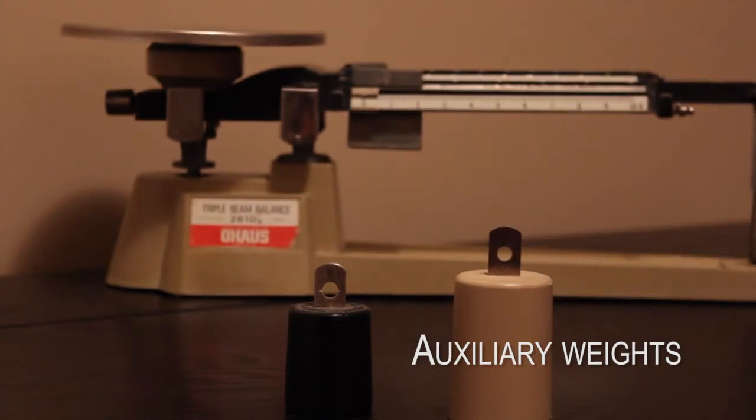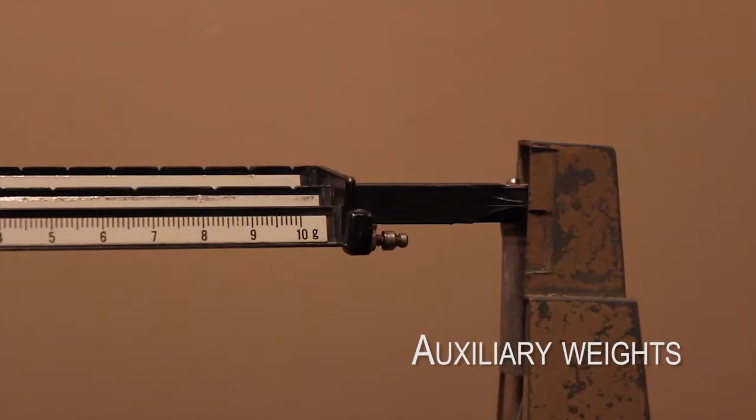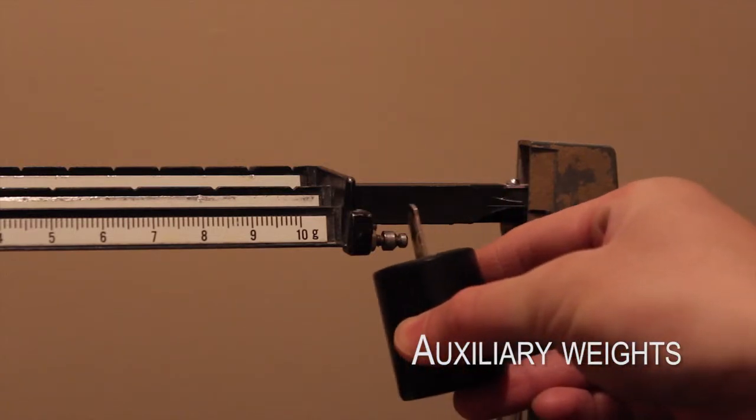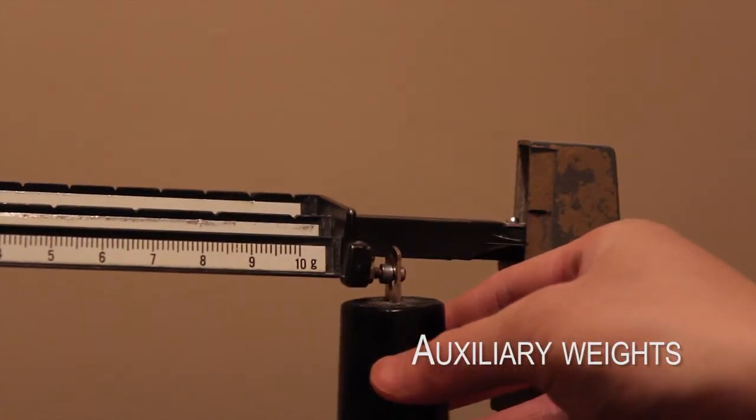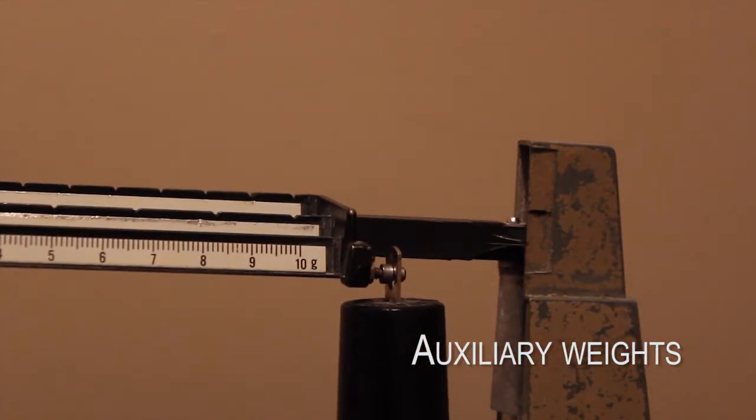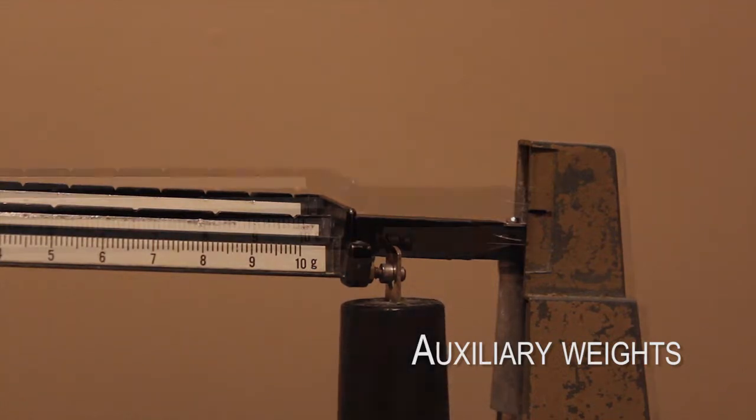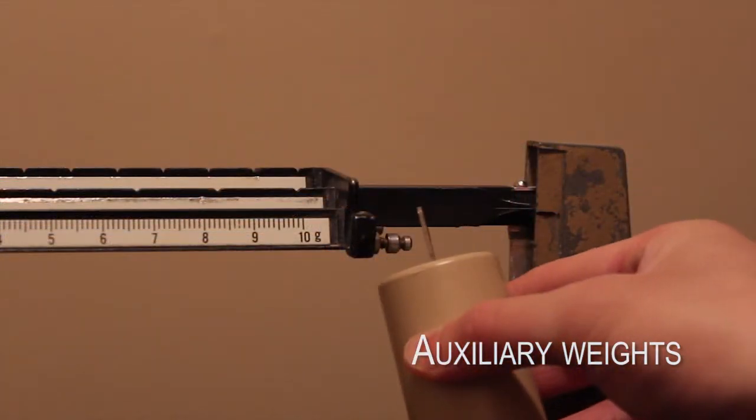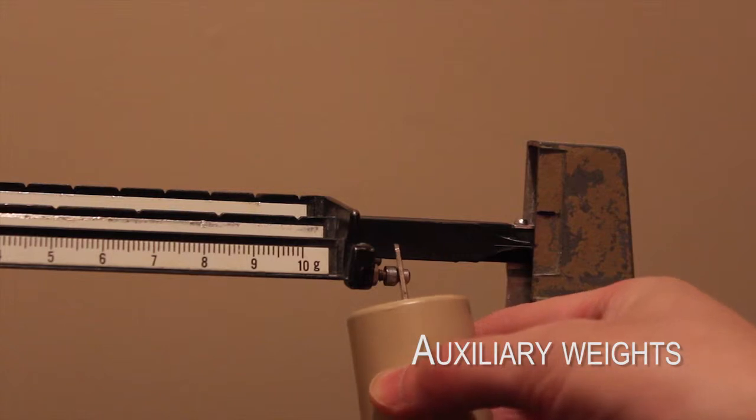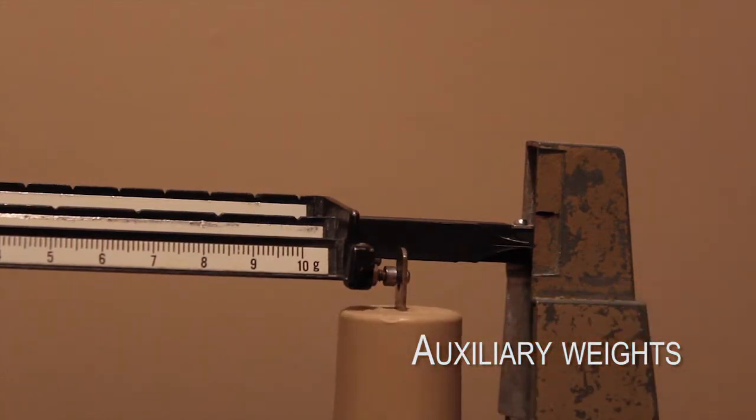Auxiliary weights can be added to measure heavier weights. Such weights include more than 500 grams and 1000 grams. The maximum weight that the triple beam balance scale can measure is 500 grams. Adding a 1000 gram auxiliary weight will allow the measurement of unknown masses up to 1500 grams in total.